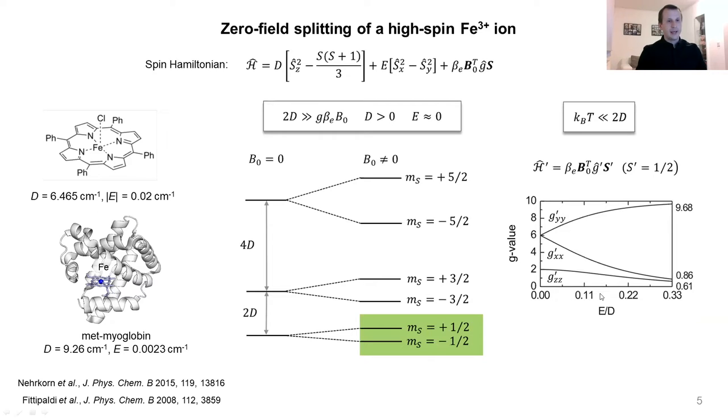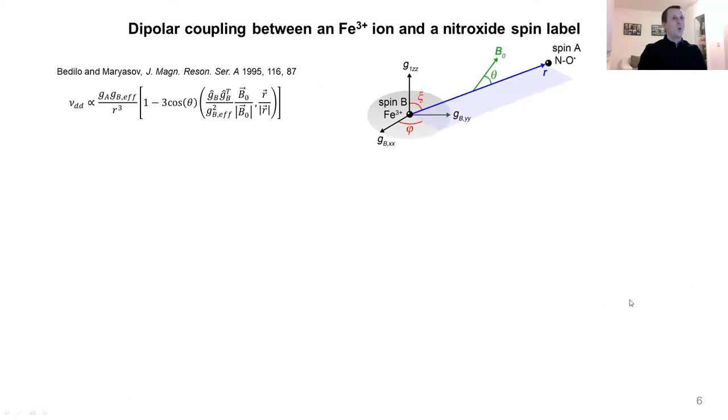If we perform our experiments at sufficiently low temperatures, meaning that the thermal energy is smaller than the energy between the lowest two doublets, then we populate only the lowest doublet of the high-spin iron, and thus this iron can be considered as an effective spin one-half system with quite anisotropic g-factor. For the relevant case when E equals zero, two out of three g-values equal six and one g-value equals two. So now we are at the situation when we can consider both low-spin and high-spin iron ions as spin one-half systems, and both of them have anisotropic g-factors.